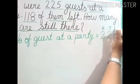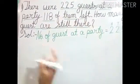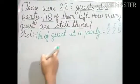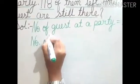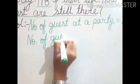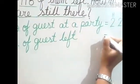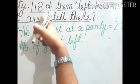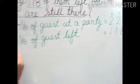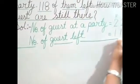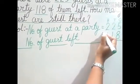Let us write the place values: hundreds, tens, ones. Now the second thing that is given — 118 of them left. So the second statement will be: number of guests left equals 118. We write 1, 1, and 8. Now draw the margin. We are doing subtraction, so remember to give the subtraction sign.